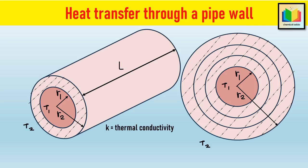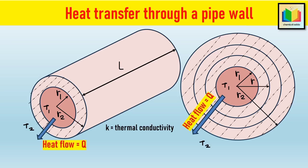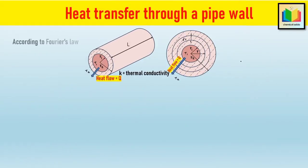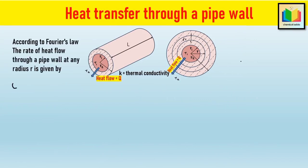Let the temperature of the interior surface be T1 and the temperature of the exterior surface be T2, such that T1 > T2, indicating that heat is transferred from the interior to the exterior of the cylinder. Now suppose there is a cylindrical element concentric with the main cylinder, having a radius r where r lies between r1 and r2, and wall thickness dr. According to Fourier's law, the rate of heat flow through the cylinder at any radius r is given by: Q = −k·A·(dT/dr), equation 1.